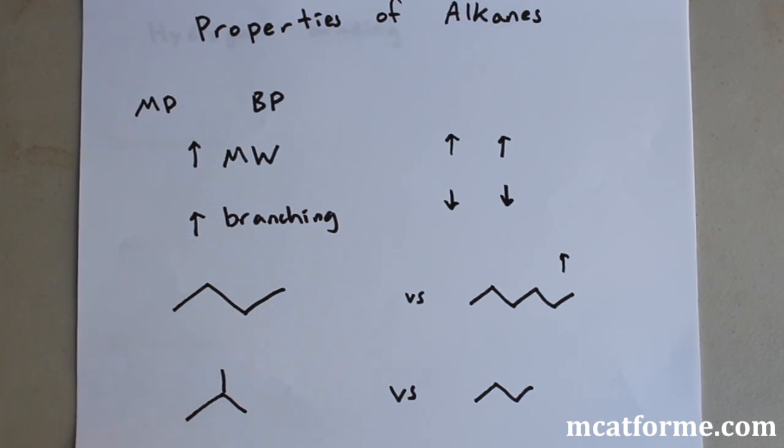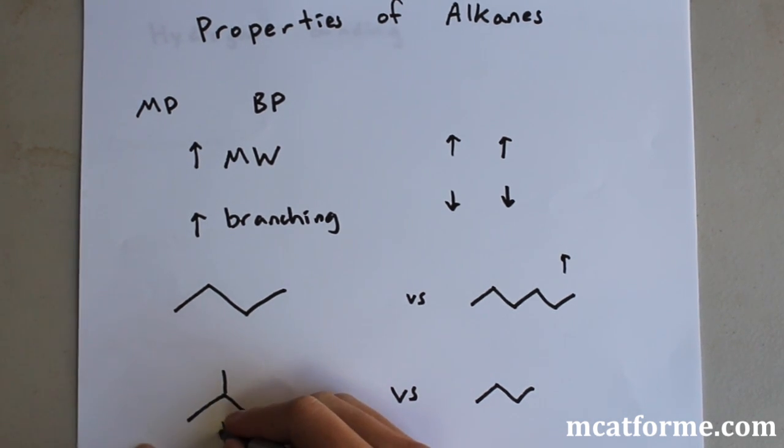In this case, we still have the same molecule—they're isomers of each other. They still have four carbons, so the same molecular weight. But now in terms of branching, increased branching on the one on the left means it's going to have a lower boiling point and lower melting point.